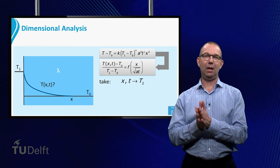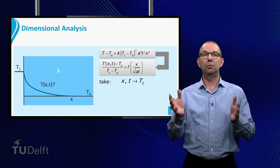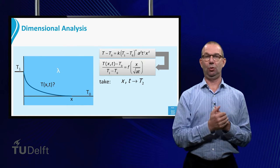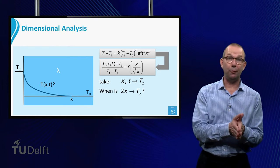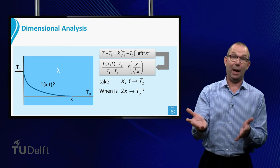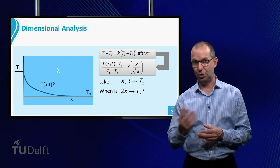Well, take the temperature at a position x at time T. It has a certain value that we call T sub 2. Next, we look at a point that is twice as far from the left side, so at 2x. At what time would that point have a temperature T2?